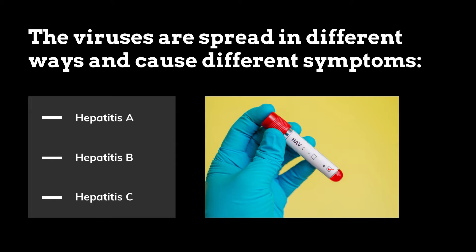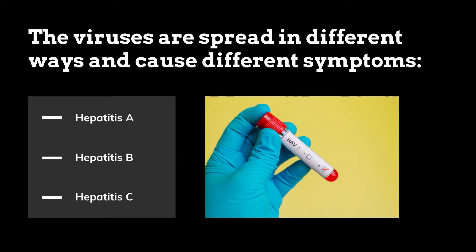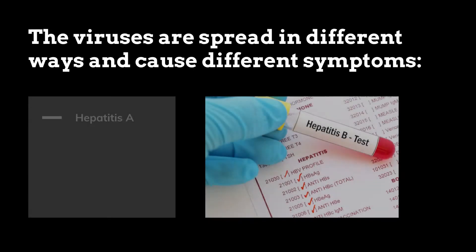The viruses are spread in different ways and cause different symptoms. Hepatitis A is most often spread by contact with contaminated feces or stool, or by eating tainted food. Though uncommon, it can also be spread through sexual contact with an infected person. Most people recover from Hepatitis A without any lasting liver damage.